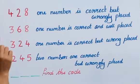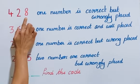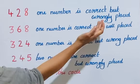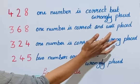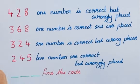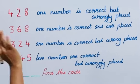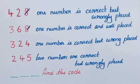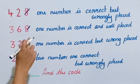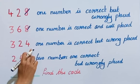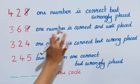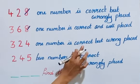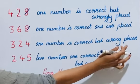So, if the same number appears in both clues and one says wrongly placed while the other says well placed, then that number must be wrong. Let's cancel it. Looking at the 2nd and 3rd clues: the correct number in clue 2 is well placed and in clue 3 it is wrongly placed.